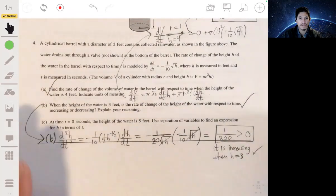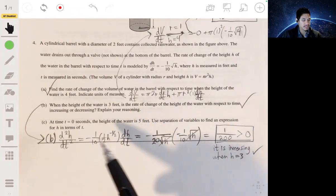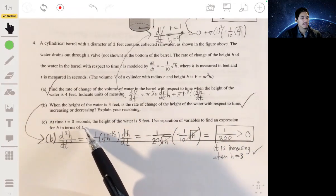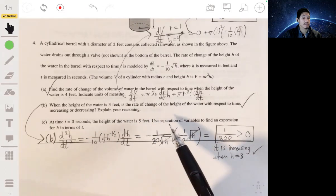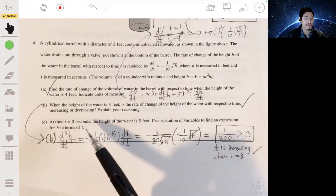That's part B. And part C. At time t equals zero seconds, the height of the water is five feet. Use separation of variables to find an expression for h in terms of t.